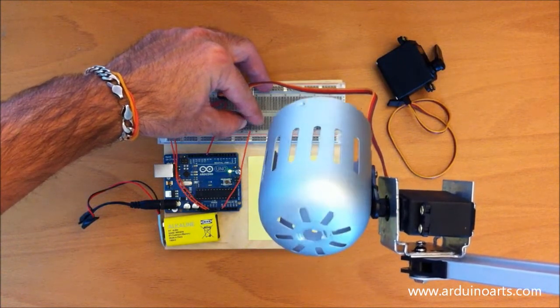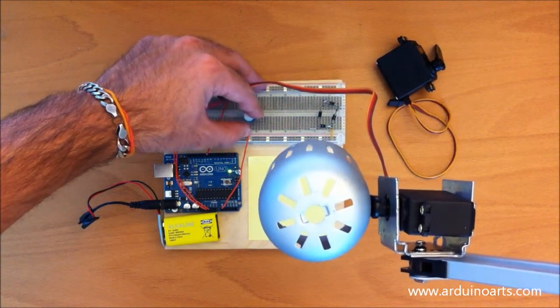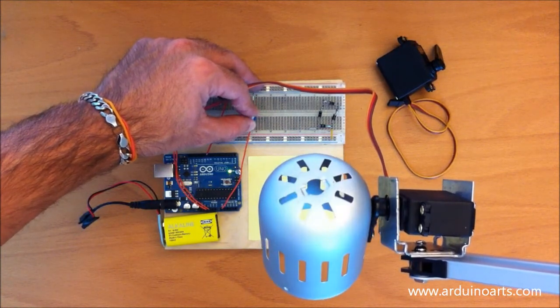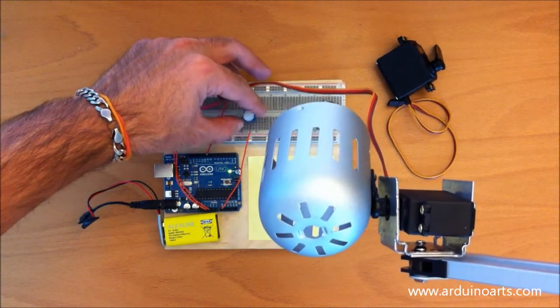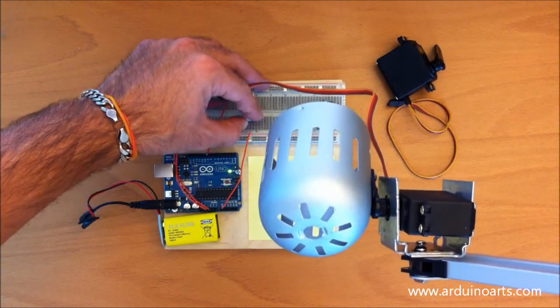This is the basic knob example for servos in the Arduino Uno software. It's only reading the state of the potentiometer and assigning it to a degree on the servo. Very basic example.